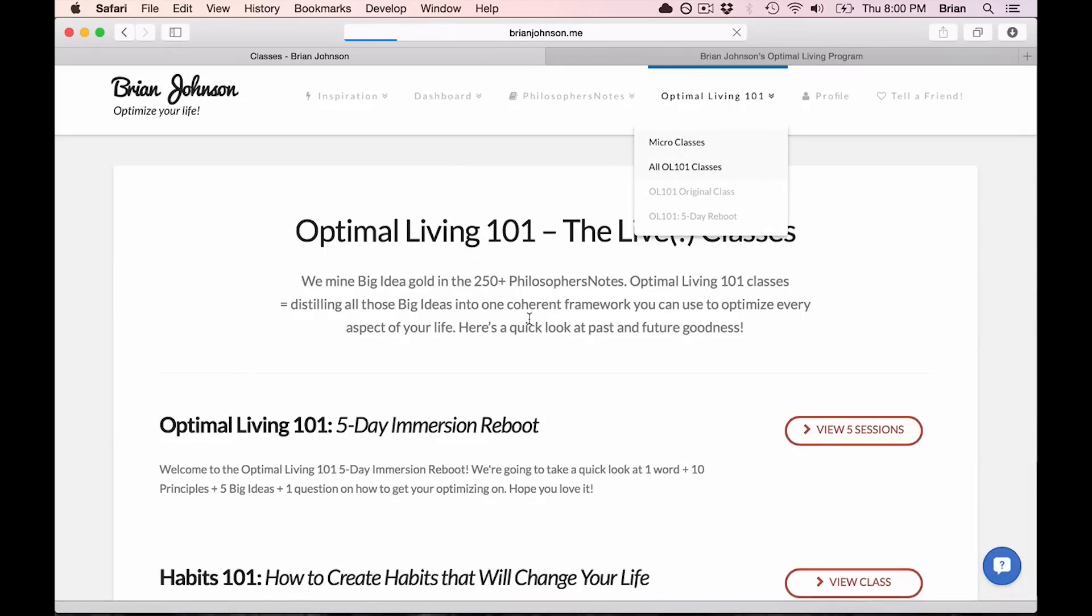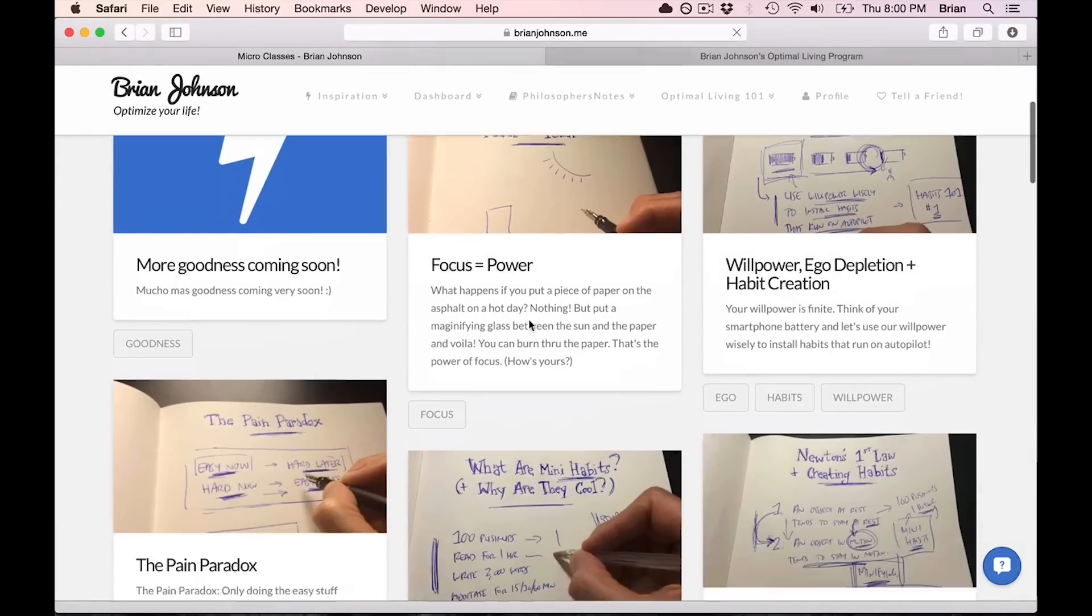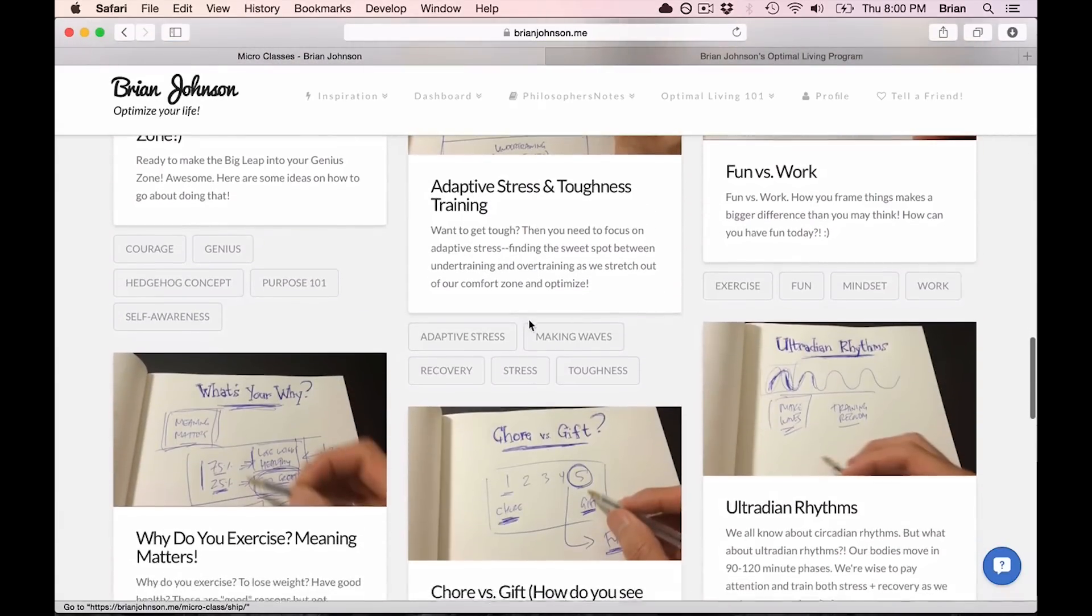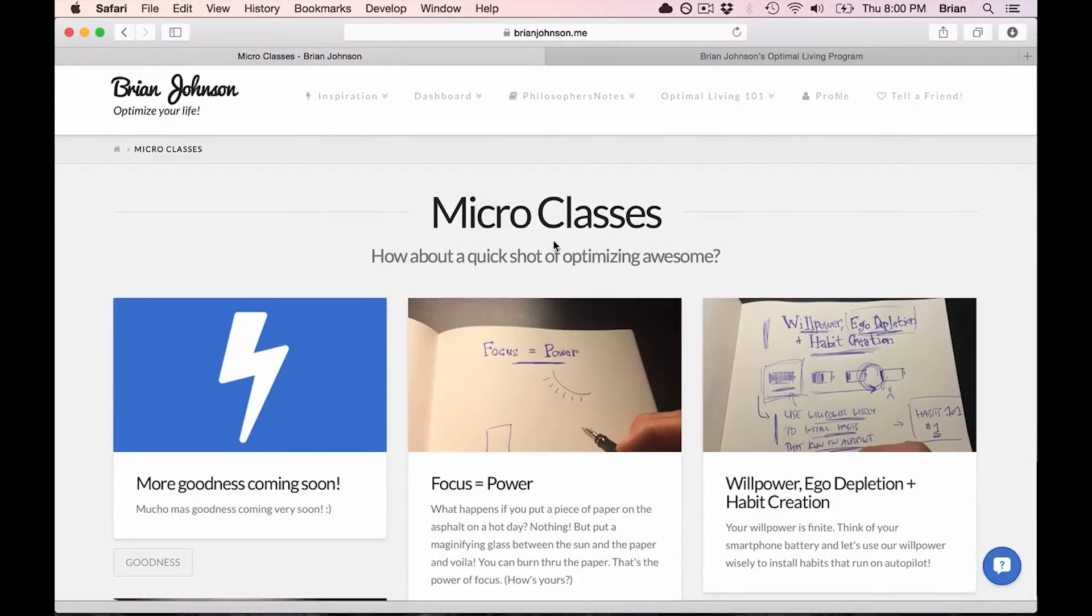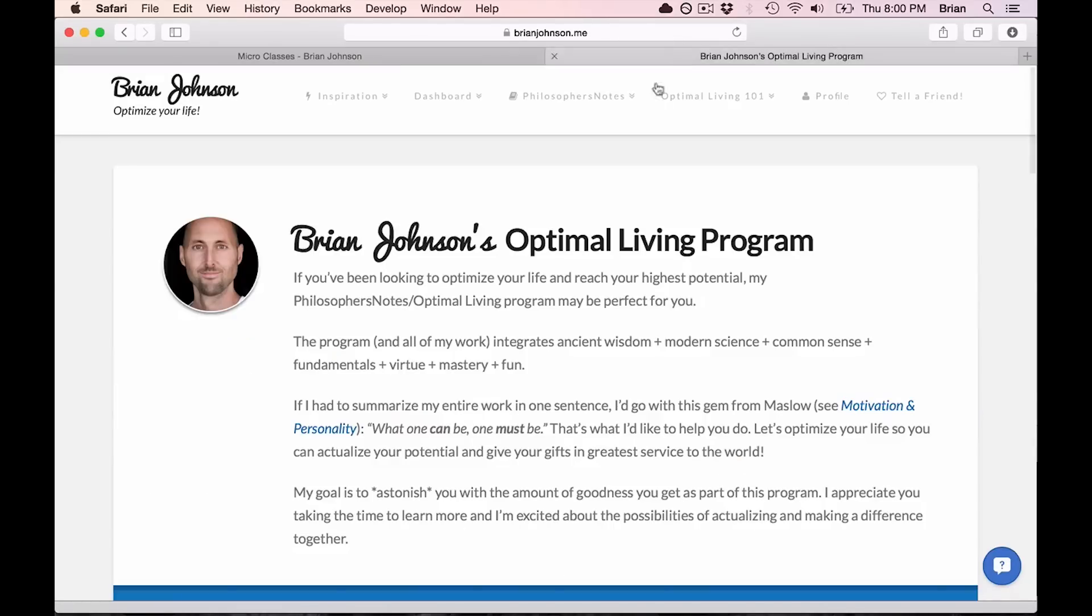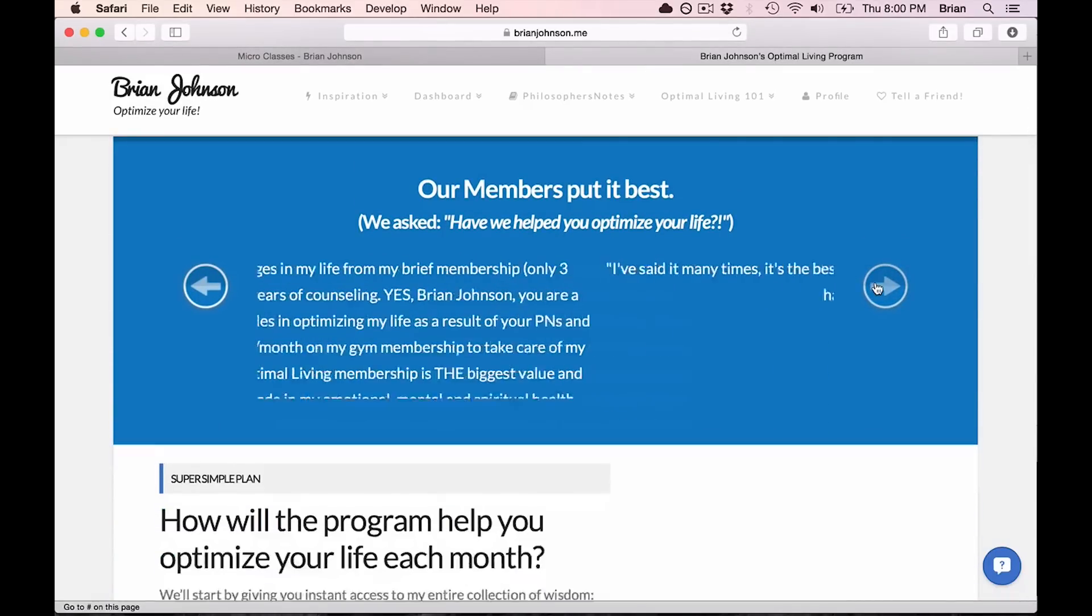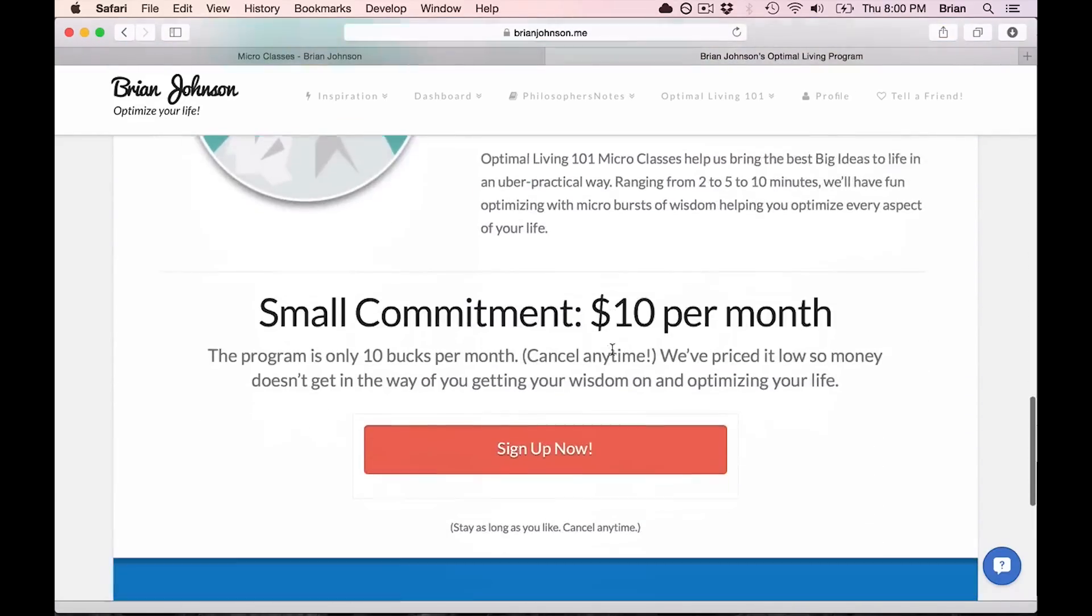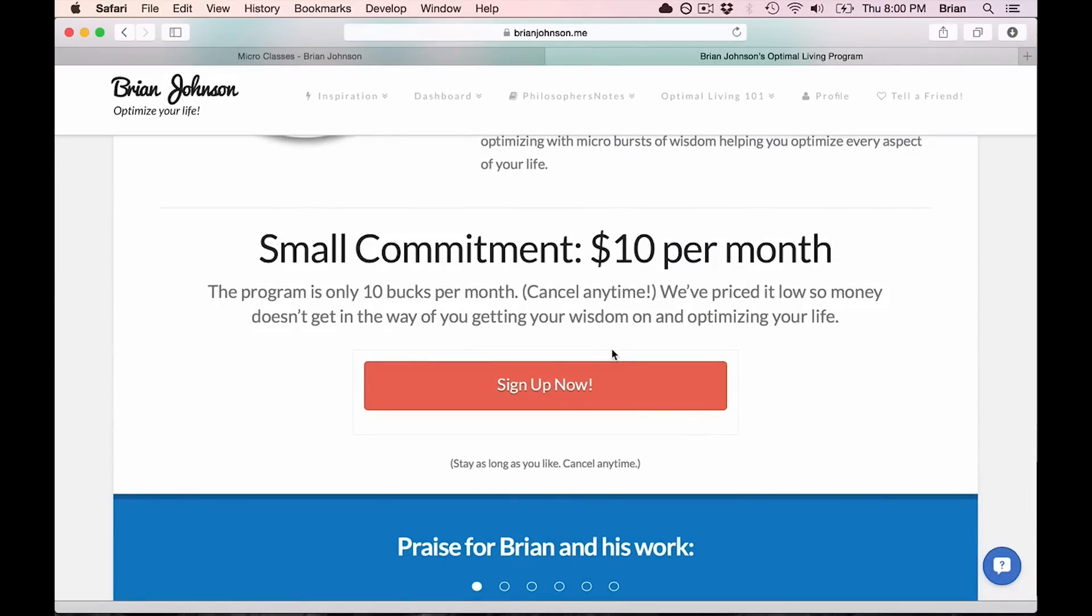And then I create micro-classes, two to three to five-minute little bursts of wisdom on my favorite great ideas from these great books across the domain that you want to optimize in your life. So we have dozens of these so far. I create 50 new micro-classes every month and 10 new philosopher's notes every month for 10 bucks a month. We're blessed to have thousands of members who are enjoying the program and sharing some incredibly kind words with us. Super simple, 10 bucks a month, cancel anytime, would be honored to be a bigger part of your life. And I appreciate your support. And here's to optimizing and actualizing.